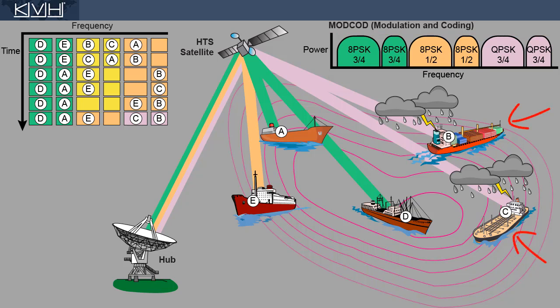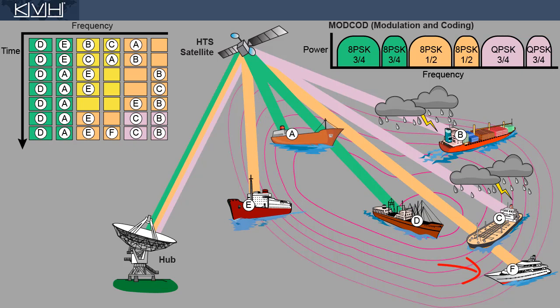In this example, vessels B and C switch to QPSK modulation, which is slower but much less susceptible to rain fade. Now an additional vessel enters the coverage area of the beam. Like vessel E, it is assigned an in-route that's appropriate for the lower signal strength at the outer edge of the footprint.